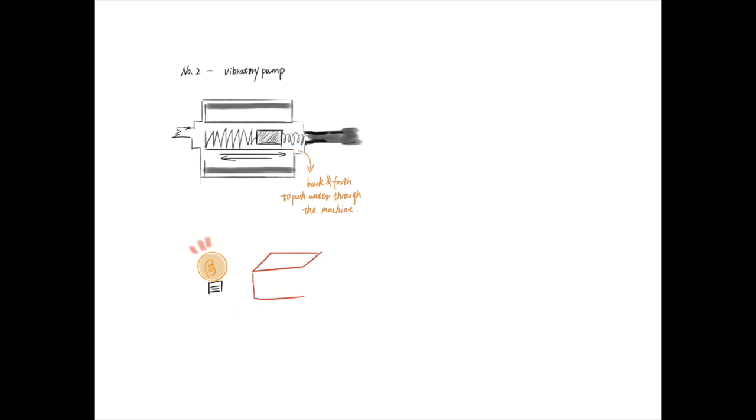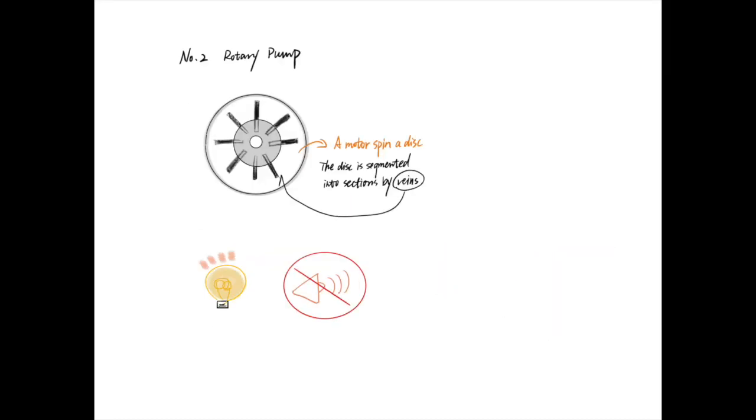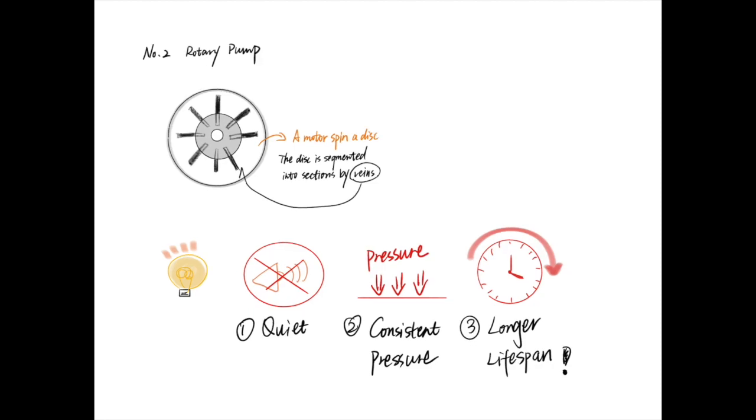These two types of pumps have their pros and cons. If you want a smaller, inexpensive, and easily replaceable pump, you can choose the vibratory pump. If you want a quieter pump that provides more consistent pressure and has a longer lifespan, you can choose rotary pumps. But both of these pumps can help produce delicious espresso.